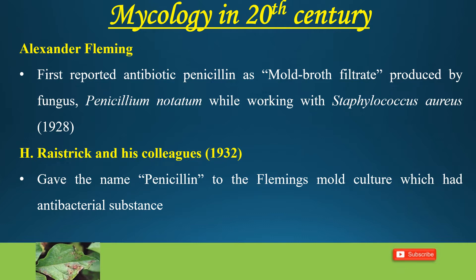Later, Raistrick and his colleagues obtained a culture of Fleming's mold and isolated the active principle in a crude form, and gave the name penicillin to the specific antibacterial substance, which was according to them a complex acid.